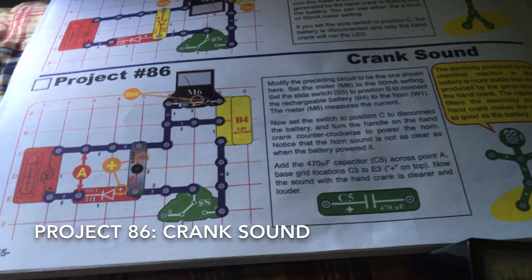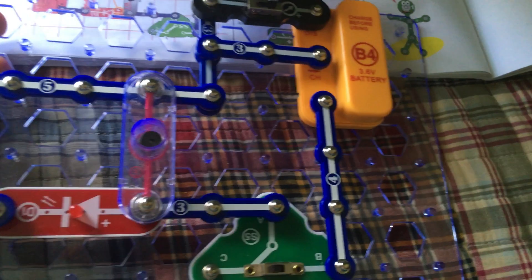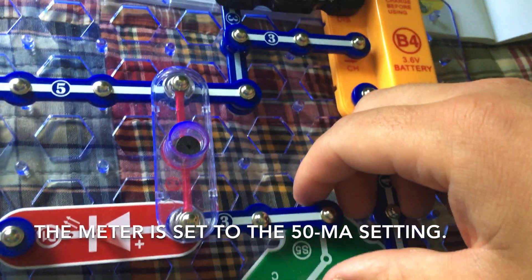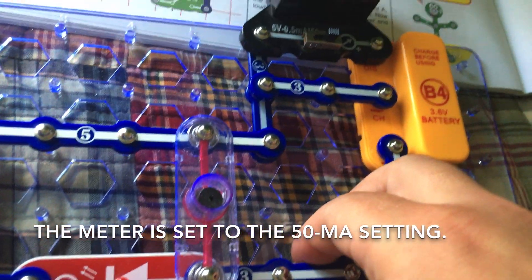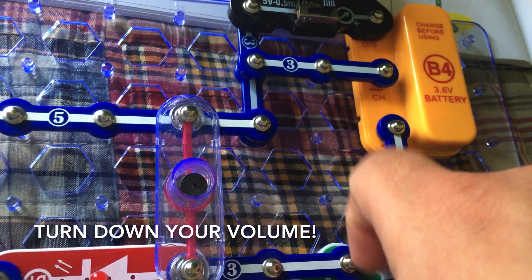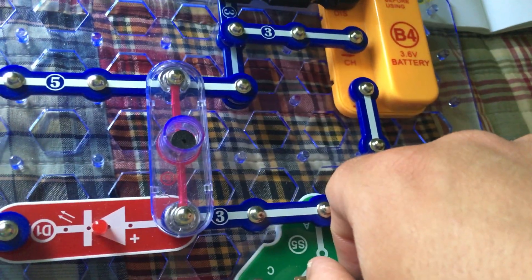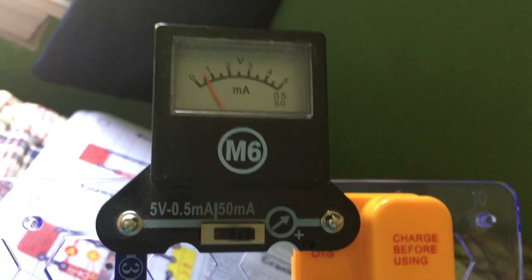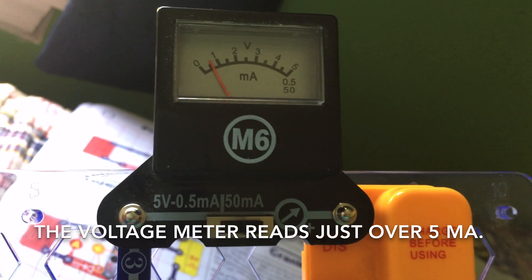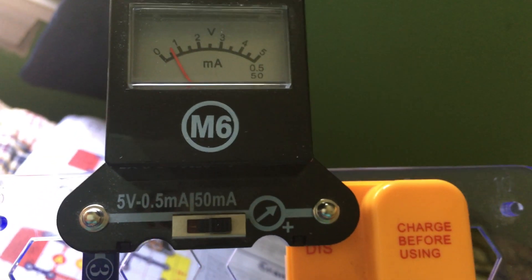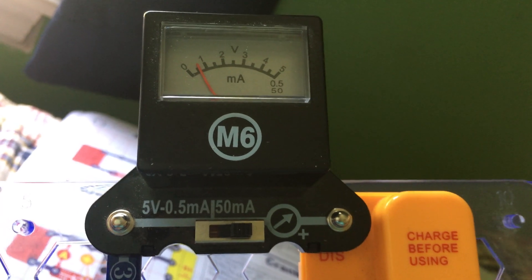Project 86 is crank sound. We modified the previous project. And, I am going to turn on the slide switch. Move it to the B position. Now, please turn down your volume because this is going to be loud. The horn sounds and the voltage meter will read, it looks like, just over 5 or maybe about 6 milliamps.